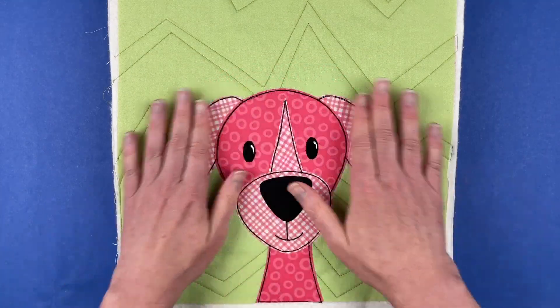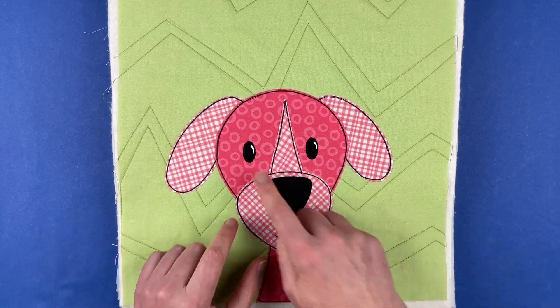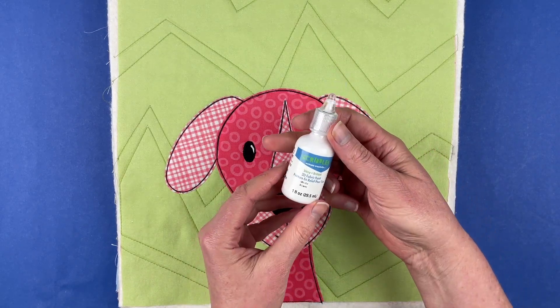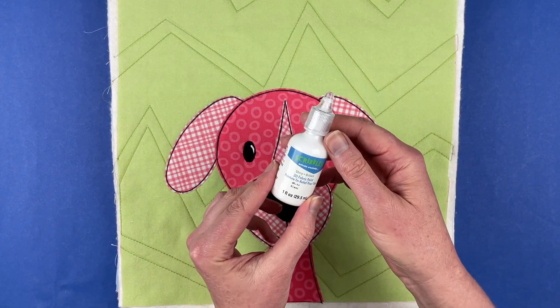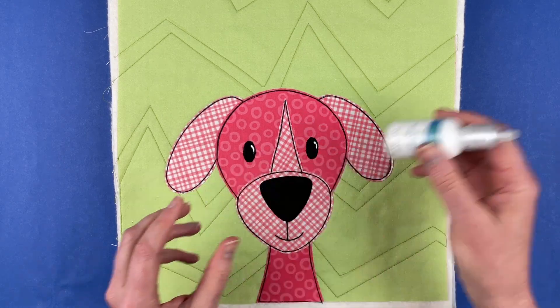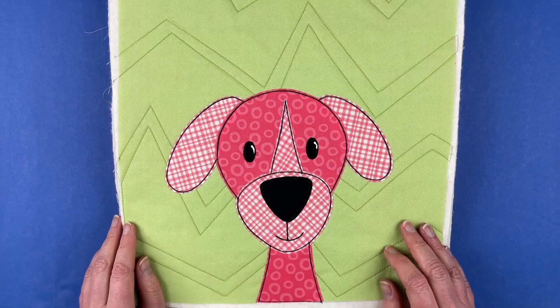Here is the finished block, all done. I've done all of the outline stitching around it, and I also added some catch lights to his eyes. I use just a simple shiny three-dimensional fabric paint for that. I like the Scribbles brand, and I've got a tutorial showing you how to do that, and the pattern has a link to that if you want to see that.